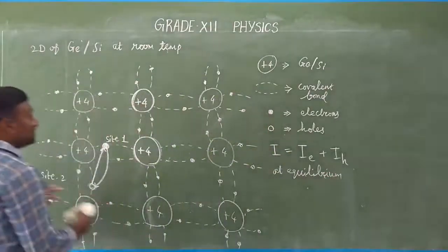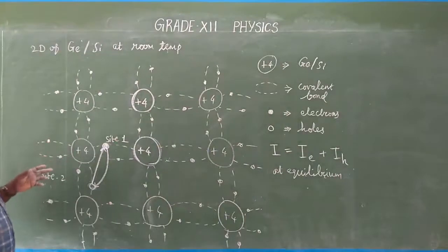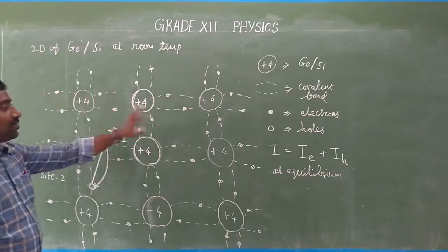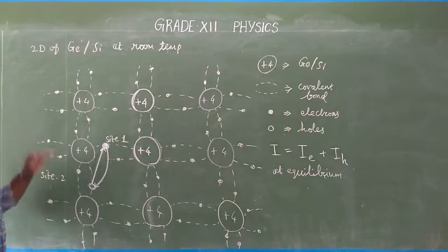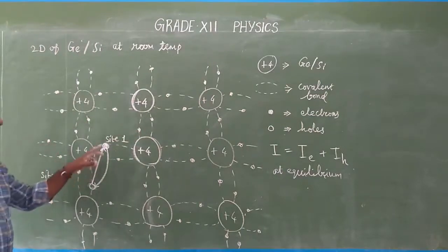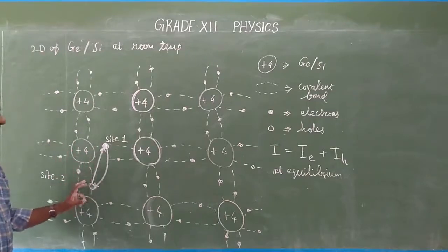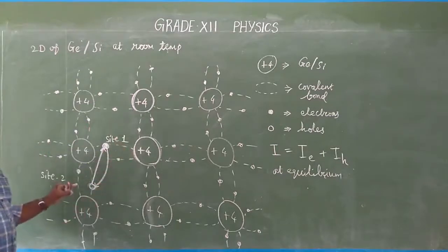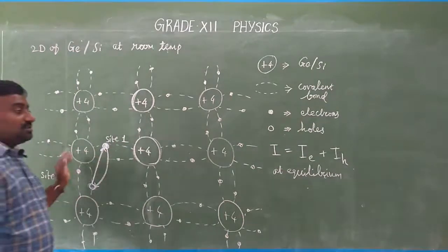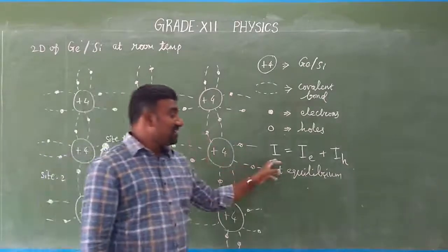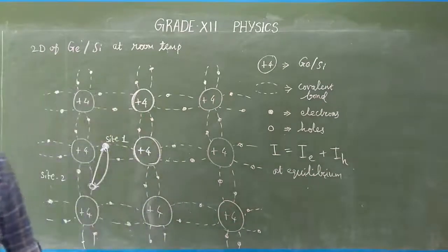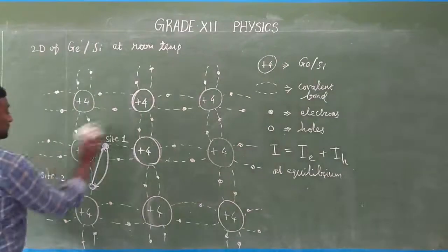Group 14 elements have four valence electrons — germanium and silicon. At low temperature every covalent bond is intact. If you raise the temperature, holes are produced and electrons from neighboring positions replace the holes, causing the hole to move. Not only electrons move but holes also move. The net current equals the sum of electron current and hole current under equilibrium conditions.